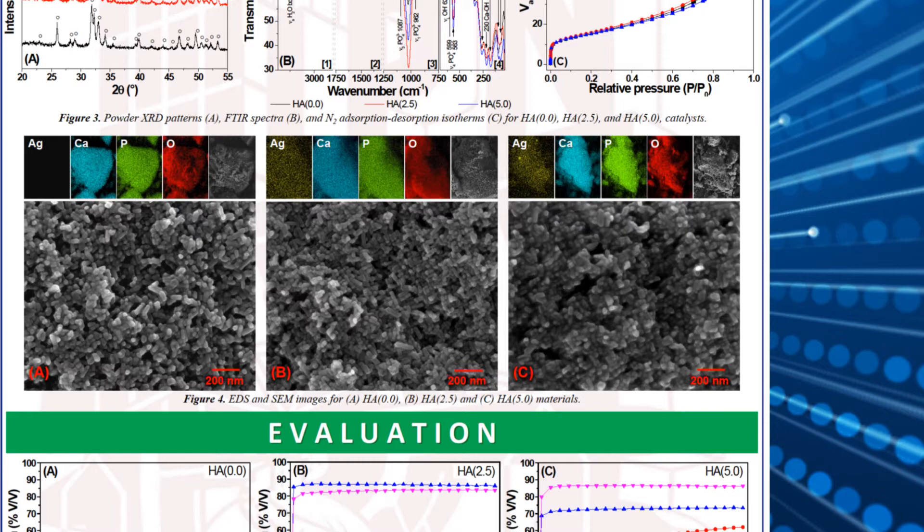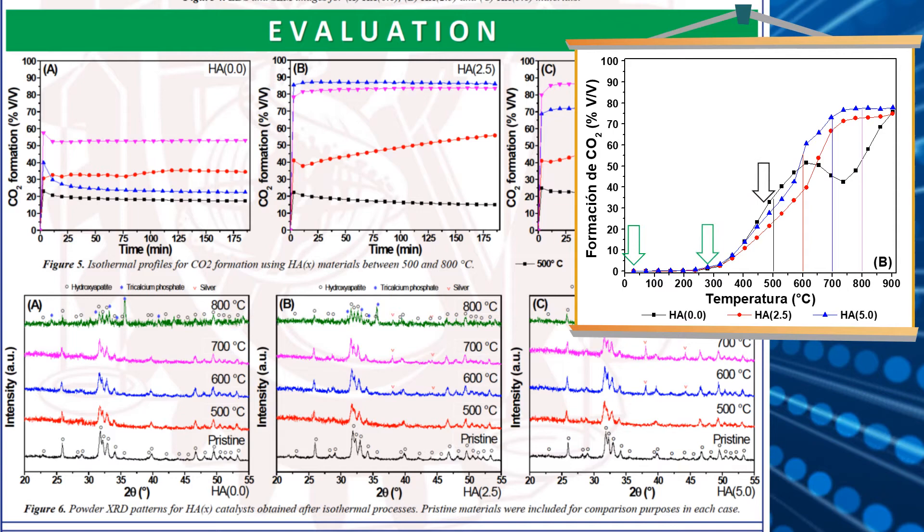In the evaluation of carbon monoxide oxidation, silver-containing catalysts showed lower catalytic activity below 650 Celsius than the unmodified hydroxyapatite sample. However...